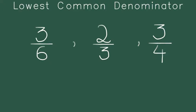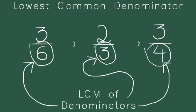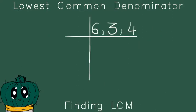Let's say we want to find the lowest common denominator of these three fractions. What do we do? Now first of all, you have to find out the LCM of the denominators. In this case, in these three fractions, you want to find out the LCM of 6, 3 and 4. So let's start to find the LCM.